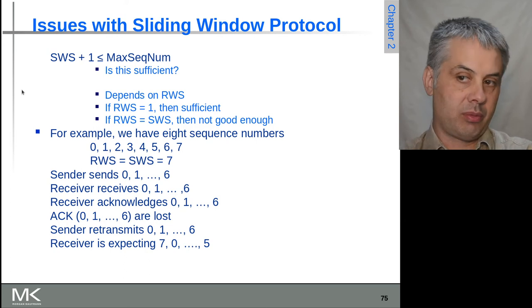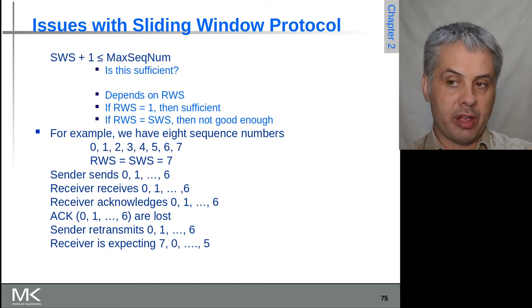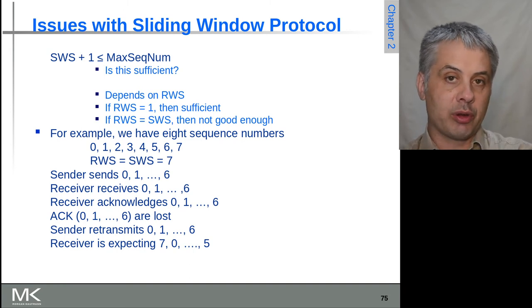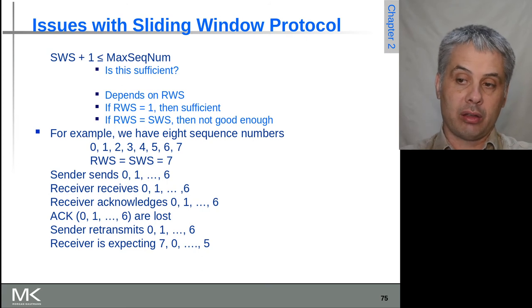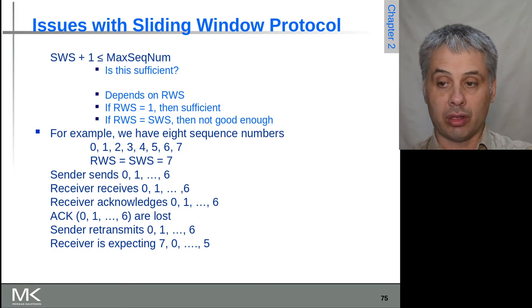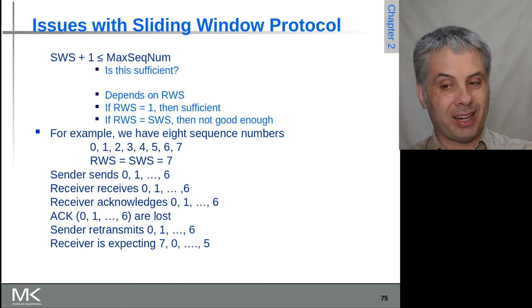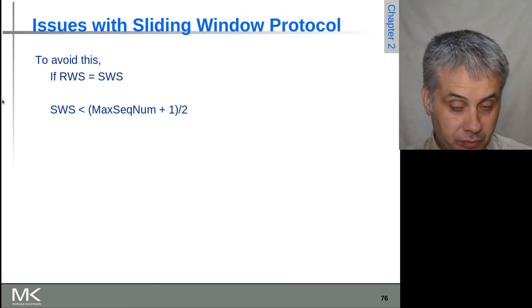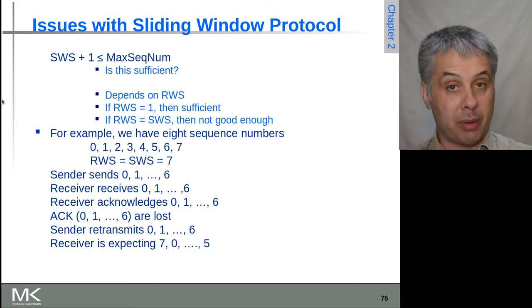The issue comes into play depending on whether the receive window size is large or small. If the receive window size is very small, there isn't the possibility for ambiguity. If, on the other hand, the receive window size is as large as the sending window size, we can get into an ambiguous situation. For example, if the sender sends sequence numbers 0 through 6 and the receiver acknowledges them, but those acknowledgements are lost, the sender retransmits frames 0 through 6. However, the receiver is now expecting frame 7 and then new frames 0, 1, 2, 3, 4, 5 — so it can't know for sure whether incoming frames are the new 0 or the old 0, and whether it should buffer them or treat them as already acknowledged.